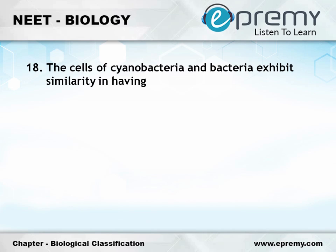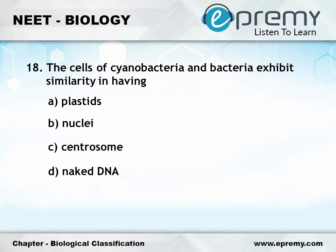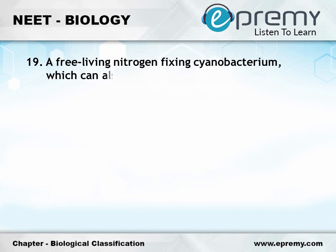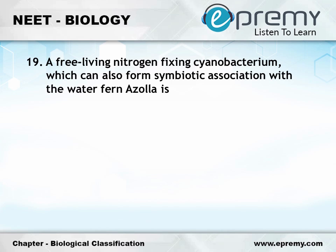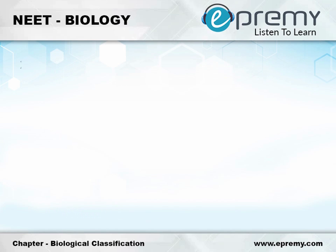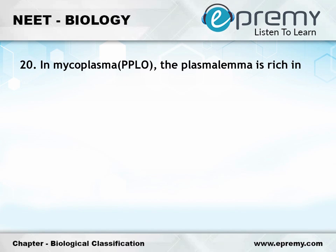Question number 18: The cells of cyanobacteria and bacteria exhibit similarity in having — Option A: plastids; Option B: nuclei; Option C: centrosome; Option D: naked DNA. The answer is Option D, naked DNA. Question number 19: A free living nitrogen fixing cyanobacterium which can also form symbiotic association with the water fern Azolla is — Option A: Tolypothrix; Option B: Chlorella; Option C: Nostoc; Option D: Anabaena. The answer is Option D, Anabaena.